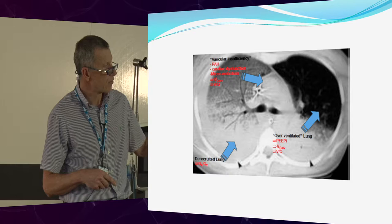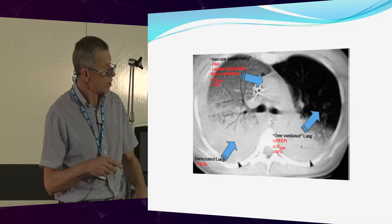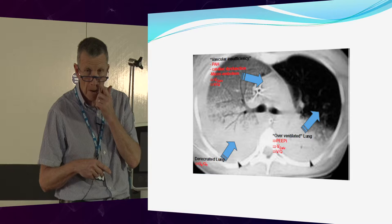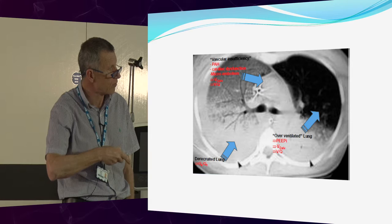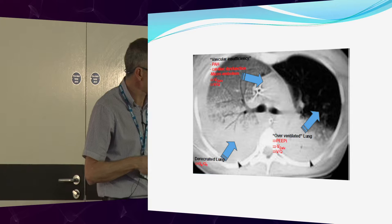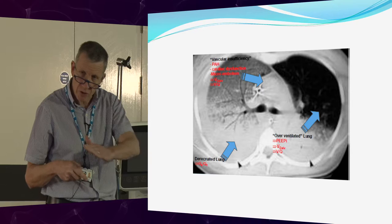If you think about ventilator-associated lung injury, the things we want to avoid are huge tidal volumes and over-ventilated lung. Thinking about your compliance curve, we don't want to be at the top over-distending them and giving them pneumothoraces and barotrauma. And we want to avoid de-recruited lung — those people at the bottom of your compliance curve where pressures lead to collapse of alveoli.